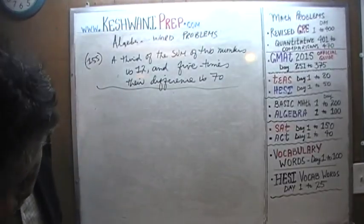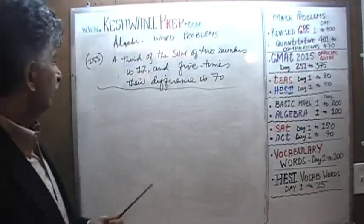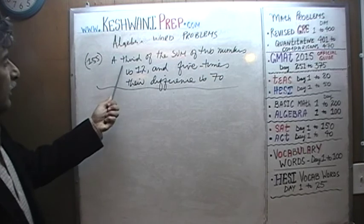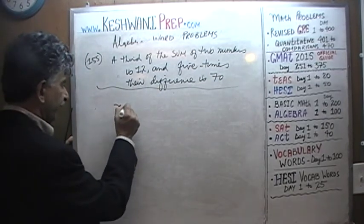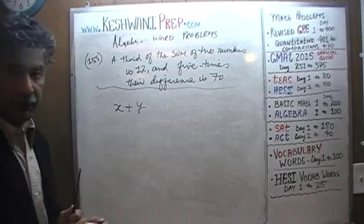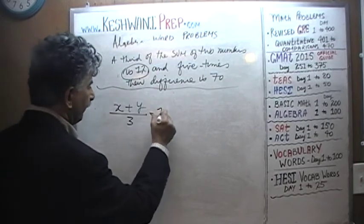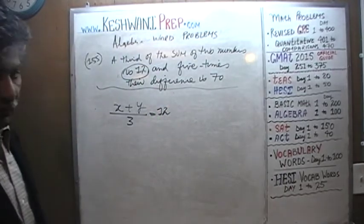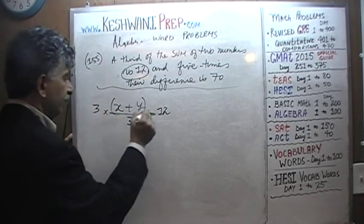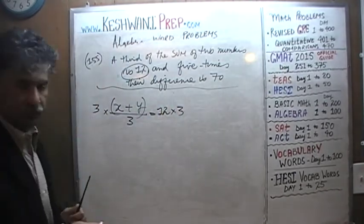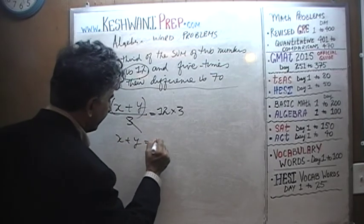Again, two straightforward sentences will give us two straightforward equations. The first sentence tells us a third of the sum of two numbers is 12. So we take their sum, let's call the numbers X and Y. X plus Y will represent their sum, and if you were to take the third of that, that we are told is 12. Before we go any further, just multiply both sides by 3 so that the 3 disappears, and the first equation that we get is that their sum must be 36.